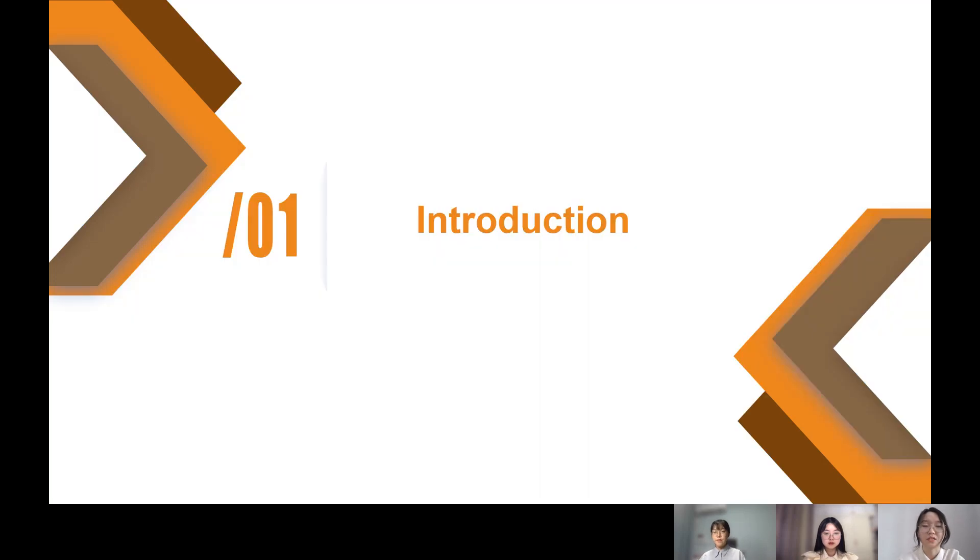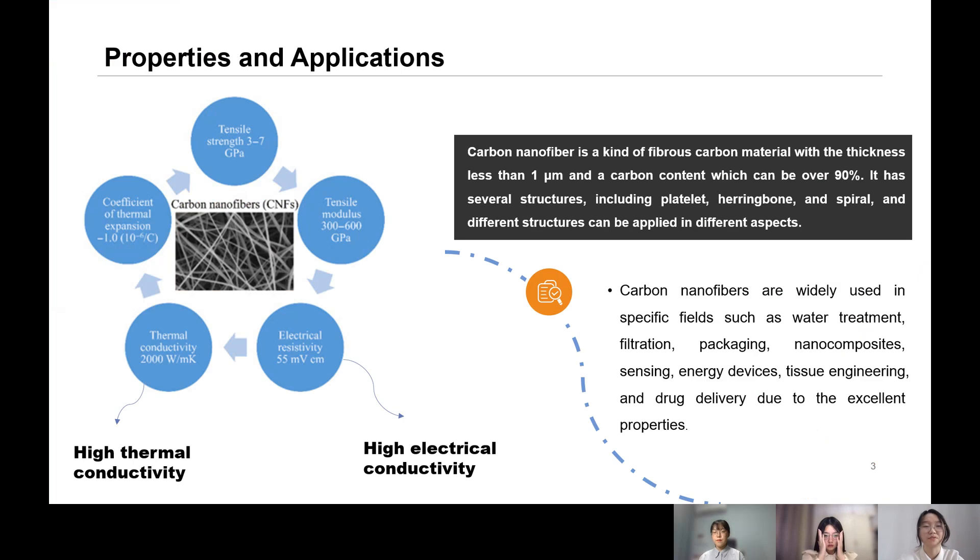First, let me give you an introduction of this material. The carbon nanofiber is a kind of fibrous carbon material with thickness less than one micrometer and a carbon content which can be over 90%. It has several structures including platelet, herringbone, and spiral. These different structures can be applied in different aspects.